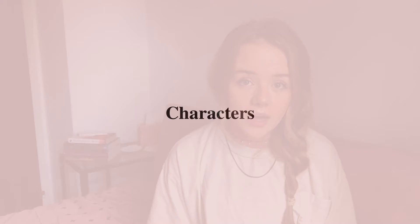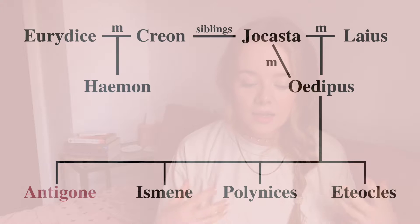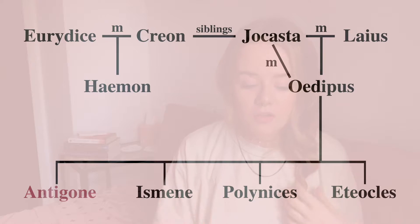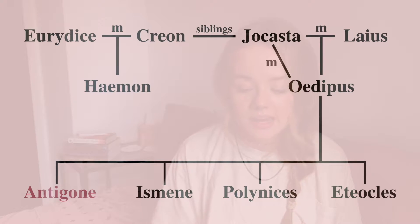Before we get into a summary, I'm going to go through the characters and talk you through who everyone is. So the protagonist is Antigone. She's the sister of Polynices and Ismene. She's the heroine who wants to uphold her father's honour.